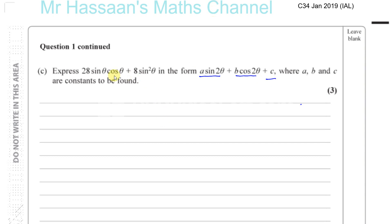We can see we've gone from a single angle to double angles, so it has something to do with the double angle formulae, which are not given to you in the formula books. However, if you do forget them, it's quite easy to use the formula books to remember them.